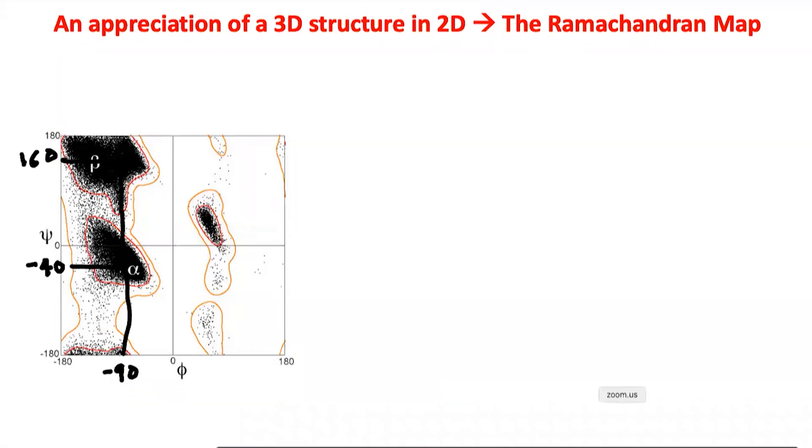So G. N. Ramachandran basically found out a way to do the following: he used a hard sphere approximation, he built models, he found a simple way to represent in two dimensions a three-dimensional model, he used the phi-psi angles to plot, and he found to his surprise that these phi-psi angles were restricted in space. They could not occupy any region. They could occupy only specific regions.